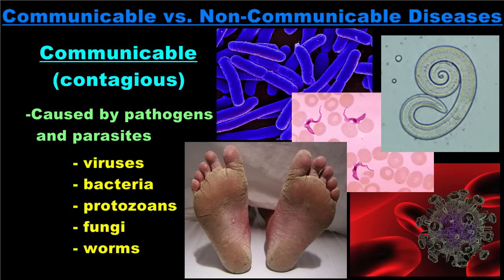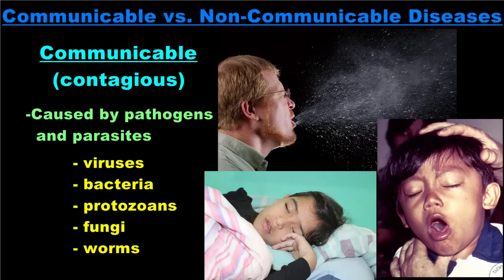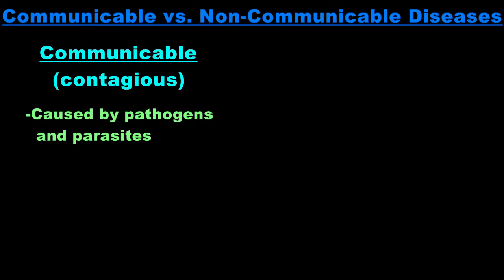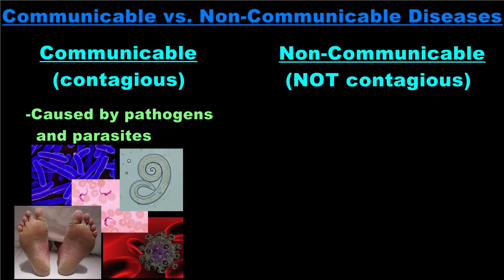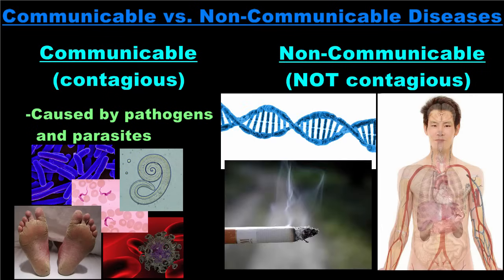As you can see, there are quite a few pathogens and parasites that cause disease in humans. Since communicable diseases are contagious, it is important to try to prevent their spread through a population. Strategies for prevention will be covered in a later lesson. While communicable diseases are contagious and can spread through a community, non-communicable diseases are not contagious, so they cannot be spread from one person to another. Communicable diseases are caused by pathogens and parasites, while non-communicable diseases have their own list of causes.